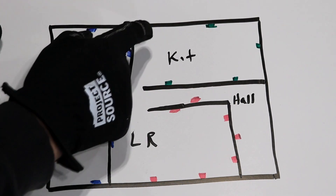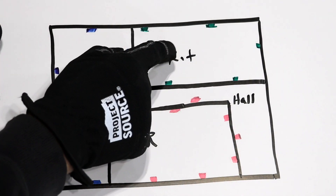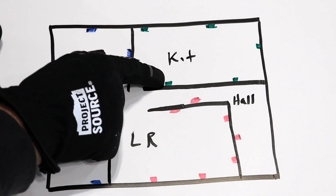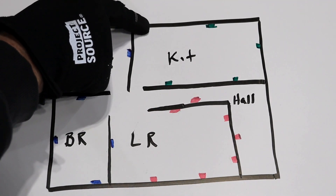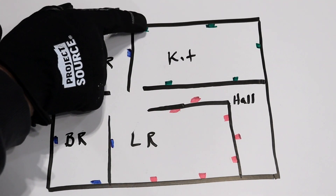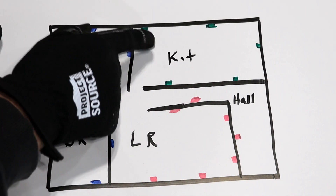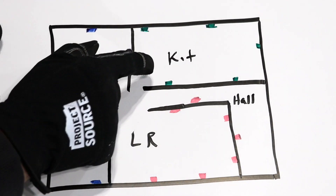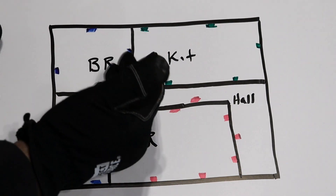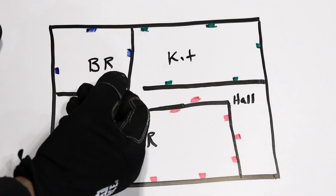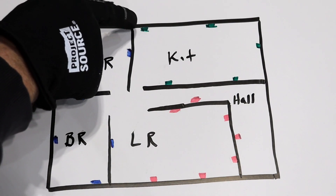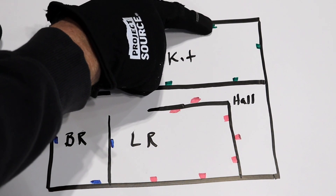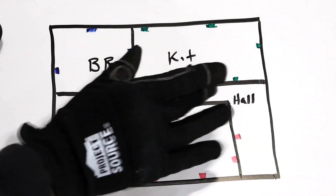If you're wondering which outlet begins the run in your kitchen, all you have to do is look for the GFCI outlet — that one should start the circuit and the run of outlets. If you have a couple of different GFCI outlets, you'll need to determine which breaker powers which GFCI outlet and then break down the circuit from there.